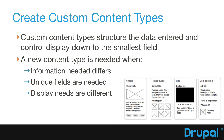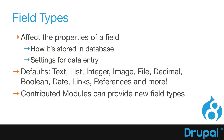A new content type is needed when the information you're storing differs, unique fields are needed, and your display needs are different. The article content type — with just title, body, and image — isn't going to cut it for our hotels. You're able to add fields to any entity in Drupal, specifically content types. This is how items are stored in the database, and all the settings for data entry are listed in the field type: text, list, integer, image, file, decimal, and more. Remember, contributed modules can provide new field types.